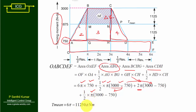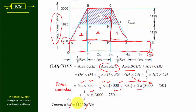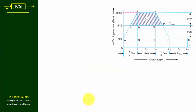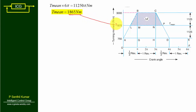Since area equals work done, and work done = T_mean × θ_max = T_mean × 6π, and since π cancels from both sides, we get T_mean = 11250 / 6 = 1875 Newton meters. We now mark this T_mean line on the diagram.